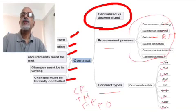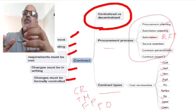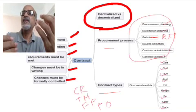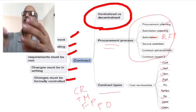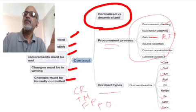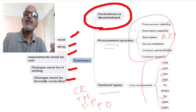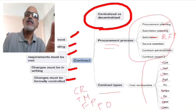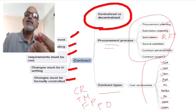So we spoke about what is a contract, centralized versus decentralized contracting, the different steps of contracting, and the different contract types. This is very important. As a project manager you must understand this, and for the PMP exam you get around 15 questions revolving around these topics. Thank you.